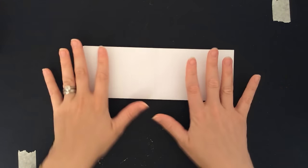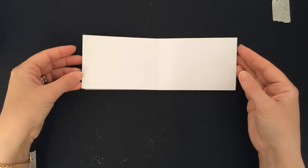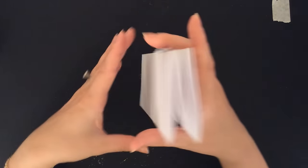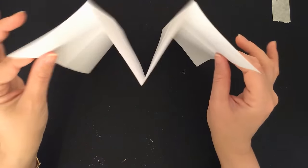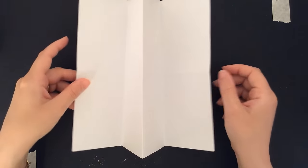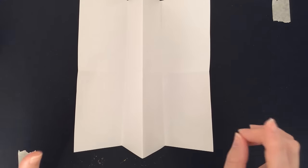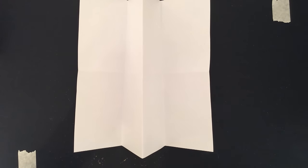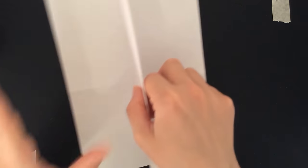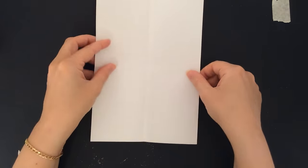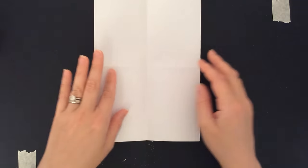Again, neatness counts with this one, guys. So, you've created what looks like a W on the side, or an M. And it's sort of an accordion folded sheet of paper. Now, here's where the cut comes in. And it is so super important to cut in the right place. I'm going to unfold these two flaps, like so.